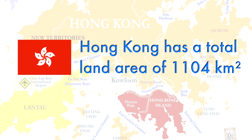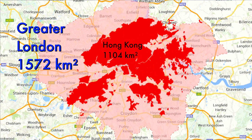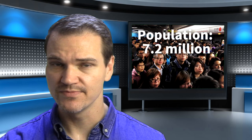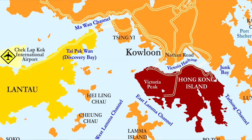Hong Kong has a total land area of 1,104 square kilometers. Let's compare its size to a couple of other places. Here it is next to Singapore, which has a total land area of 687 square kilometers. And here it is superimposed over a map of Greater London, which has a total land area of 1,572 square kilometers. With a population of 7.2 million, Hong Kong has one of the highest population densities in the world, with 6,690 people per square kilometer. Although there are over 260 islands in Hong Kong, there are just a few large islands and a mainland peninsula which comprise most of the land area.